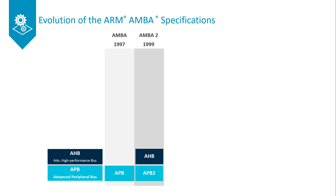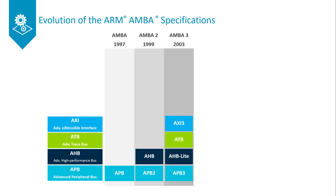Furthermore, AHB features larger bus widths in respect to APB. In 2003, ARM introduced the third generation AMBA 3, including Advanced Trace Bus as part of the CoreSight on-chip debug and trace solution. AHB-Lite is a subset of AHB, and this subset simplifies the design for a bus with a single master.